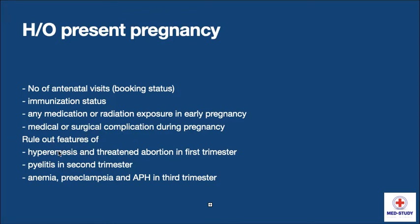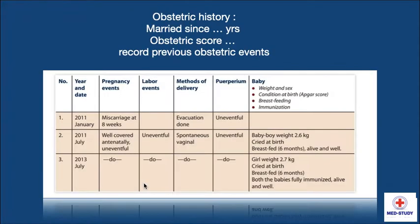We have to rule out the features of hyperemesis and threatened abortion in the first trimester, pyelitis in the second trimester, and anemia, preeclampsia, and antepartum hemorrhage in the third trimester.